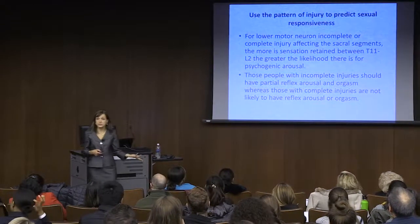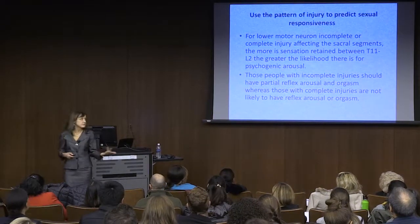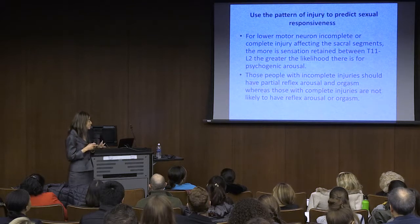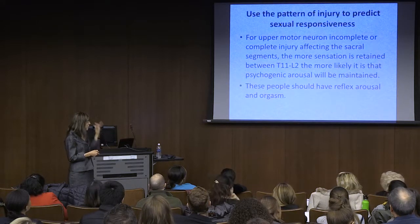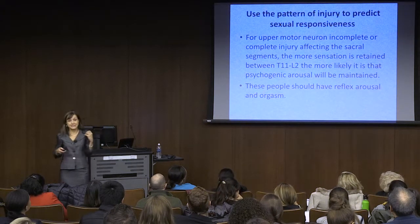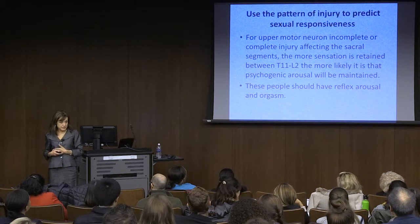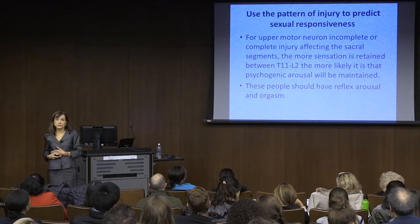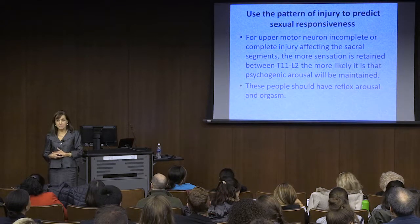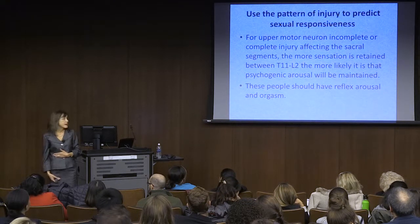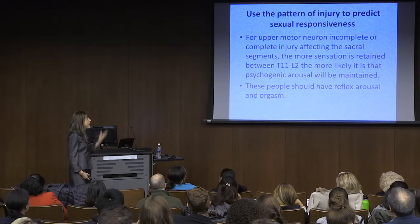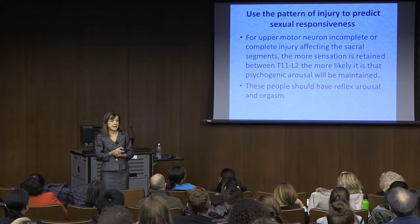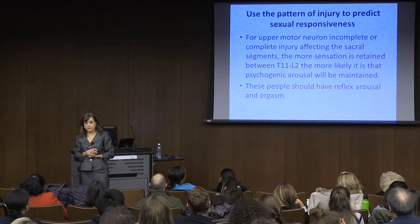We use the injury first to predict responsiveness. If it was an upper motor neuron injury and it's incomplete, the ability to have psychogenic function—no matter where your injury is—is related to sensation from belly button to pockets. And anybody with an upper motor neuron injury should be able to have an orgasm and reflex arousal.